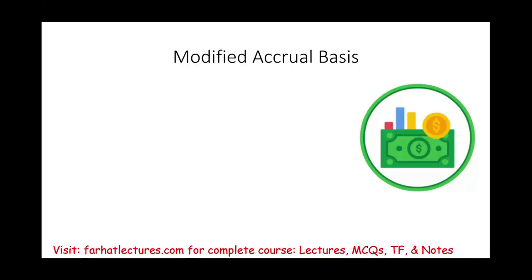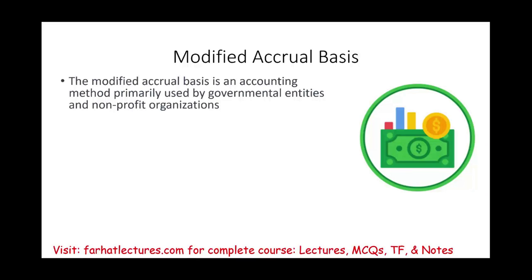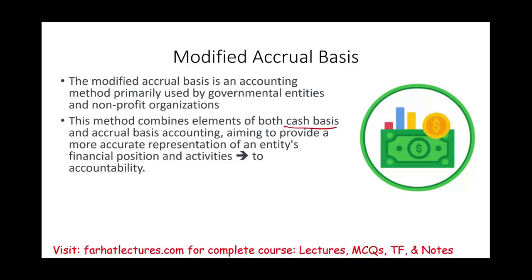The modified basis of accounting is used by governmental entities and not-for-profit organizations. This method combines the basis for cash and the basis for accrual. The purpose is to provide a more accurate representation of the entity's financial position, because for government entities, you don't care about profitability — you want to hold them accountable. Modified accrual is a better measurement for accountability, as you will see shortly.